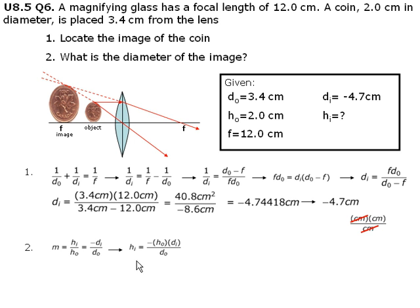We multiply both sides of the equation by the height of the object, which will then give us a nicer version of the equation with our unknown variable isolated. This is the height of the image.